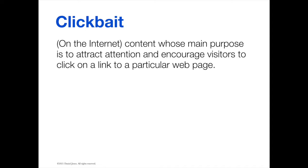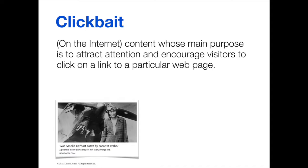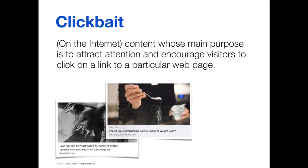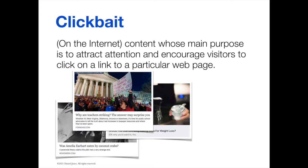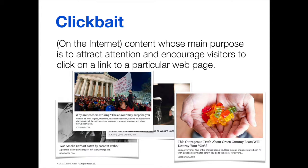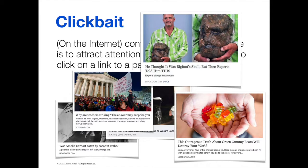Clickbait. On the internet, it's content whose main purpose is to attract attention and encourage visitors to click on a link to a particular webpage. Examples include: "Was Amelia Earhart eaten by coconut crabs?" "Should you start drinking baking soda for weight loss?" "Why are teachers striking? The answer may surprise you." "This outrageous truth about green gummy bears will destroy your world." And: "He thought it was Bigfoot's skull, but then experts told him this." These are all examples of clickbait — the purpose is to grab your attention with an outrageous headline and photograph in the hopes that you will click on it.